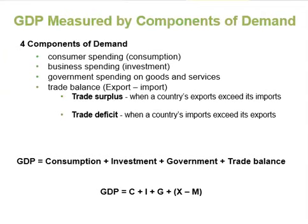If we look at GDP from the demand side, then GDP will include all four components of a nation's demand: consumer spending, or consumption; business spending, or investment; government spending on goods and services; and spending on net exports, or trade balance. Net exports equals the dollar value of exports minus the dollar value of imports. You can think of spending on net exports as spending by foreign customers.